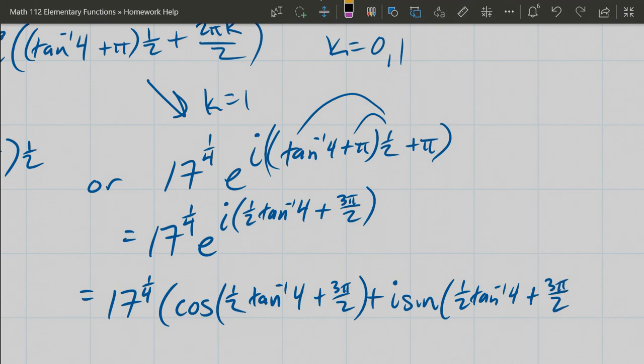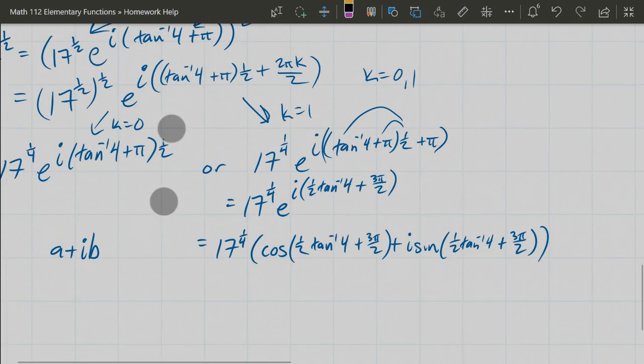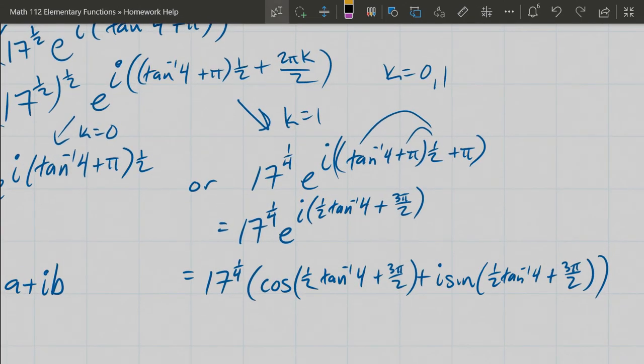And now these angles are not going to be nice, so you really, if you want to get a decimal answer in a + ib form, you're really going to need to use a calculator here. You could use the angle sum and then you can carefully try to unwind that.